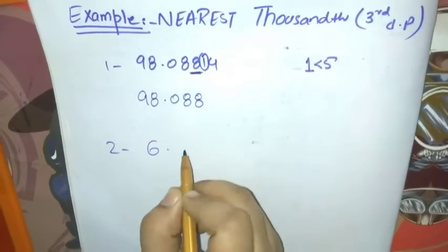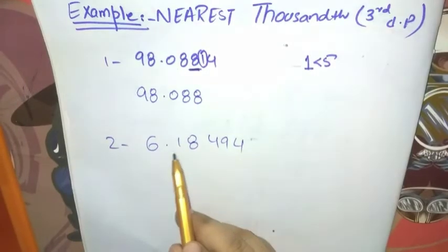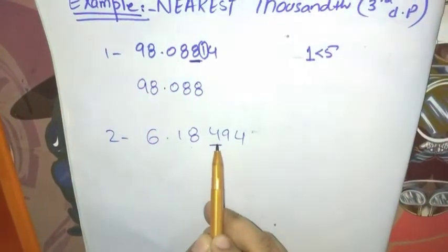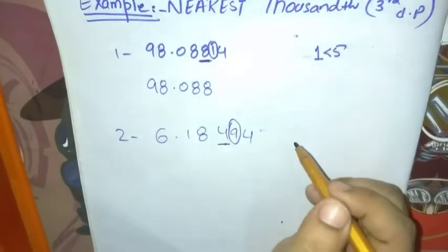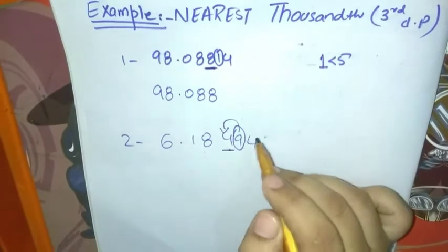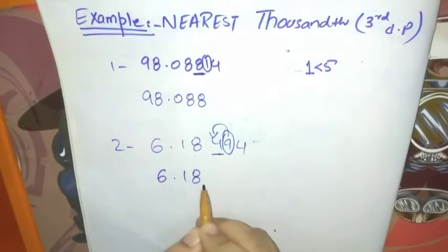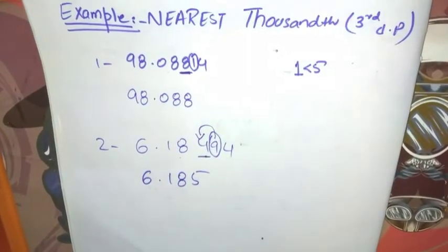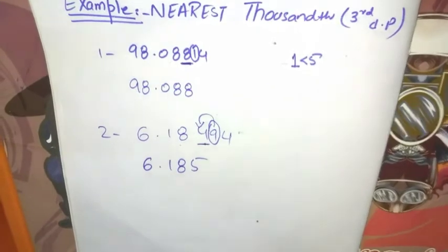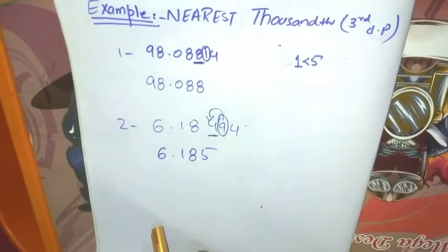The last example is 6.18494. The first place after the decimal is the tenth, the second is the hundred, and the third is the thousands place. We underline this digit and circle the next digit. This digit is greater than 5, so we add 1 to this digit. The number after rounding becomes 6.185. This is the example of rounding to the third decimal point. I hope you understand today's lecture.